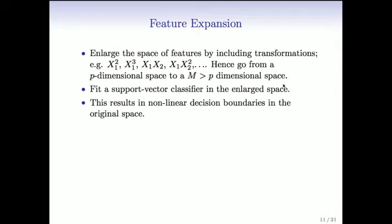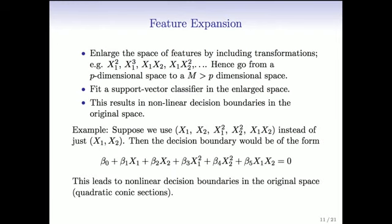So enlarge a feature space, and then fit a linear support vector machine in the enlarged space. And then when you project it down to the original space, it results in a nonlinear decision boundary in the original space. So for example, suppose we use degree 2 polynomials. So we'll use x1, x2, x1 squared, x2 squared, and x1 times x2.